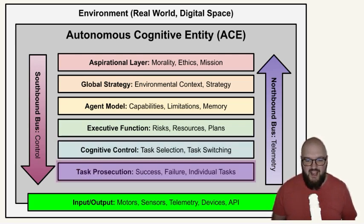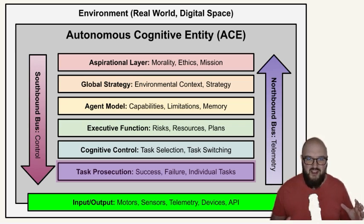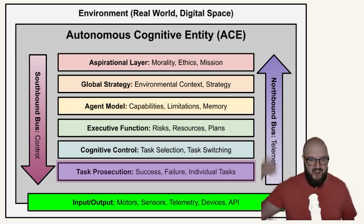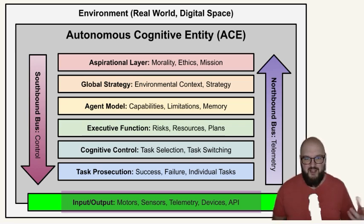Last is task prosecution — this ties back to task switching. If it's a success, great. But failure — and not just failure but frustration — is the big one. You don't want an AI to keep doing the same thing over and over if it's not working or not leading to the actual goal. Then the individual task: you've set it, selected it, now you actually have to execute it. The output is doing the actual task — cleaning the floor as a vacuum, whatever it might be — to achieve the overall mission.